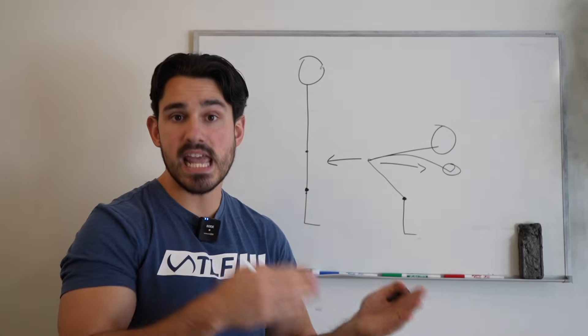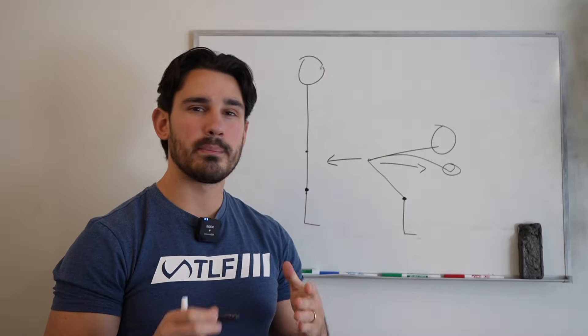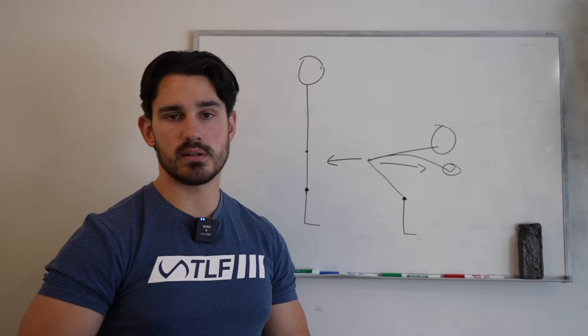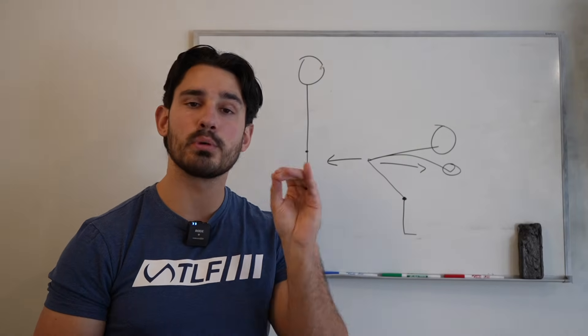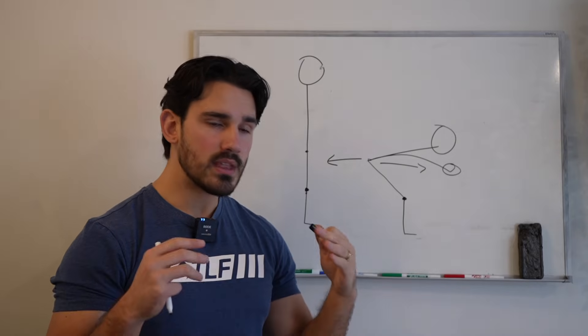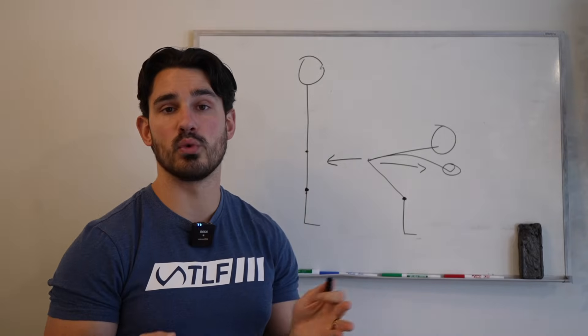Because ideally in a hip hinge movement, we're primarily loading things like the glutes and hamstrings and the adductors, as opposed to the erector muscles, at least primarily. The erectors will always be contributing because they need to keep your spine rigid. But this oftentimes doesn't end up working out.